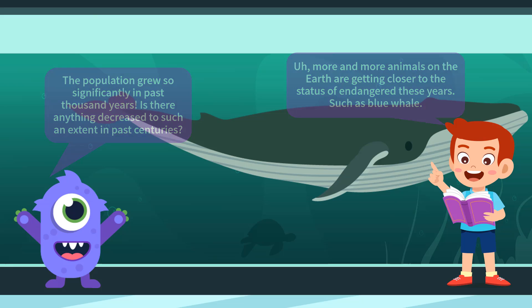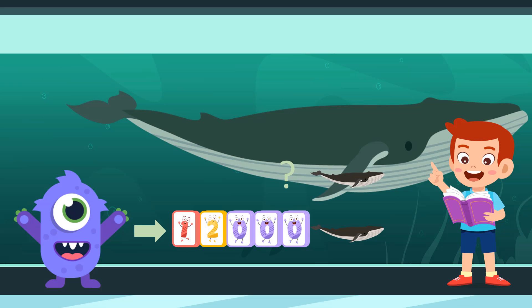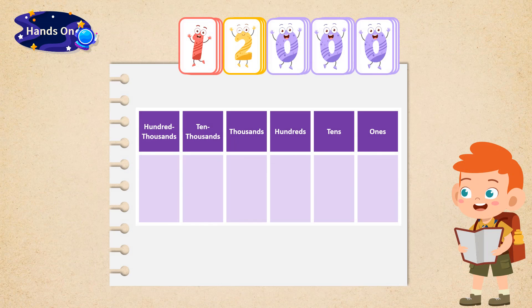It was counted that there exist around 12,000 blue whales worldwide now. Before humans started trying to fish for them, it is said that there were more than ten times the number of blue whales on Earth today. 'Lumos, do you know the number of blue whales at that time? Let's calculate together,' just like we did to find the population of Lumos' hometown before.